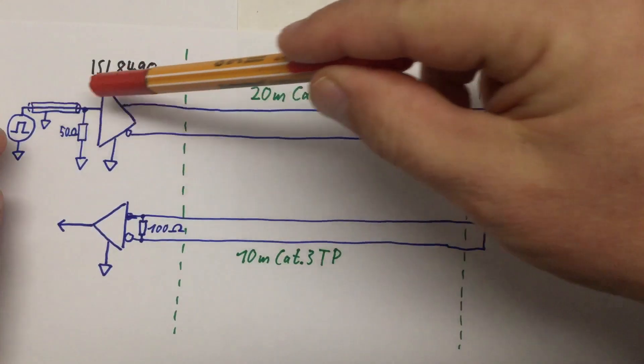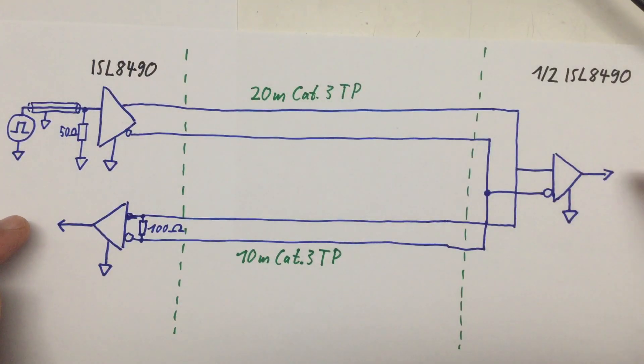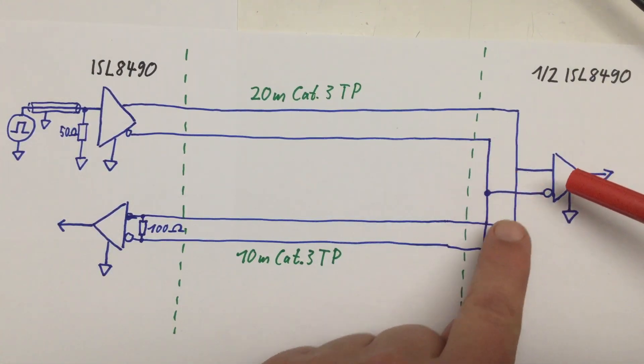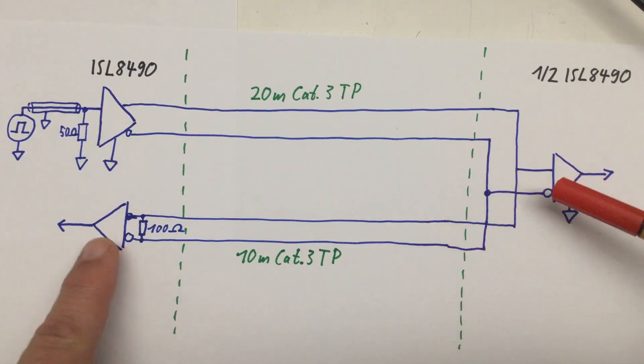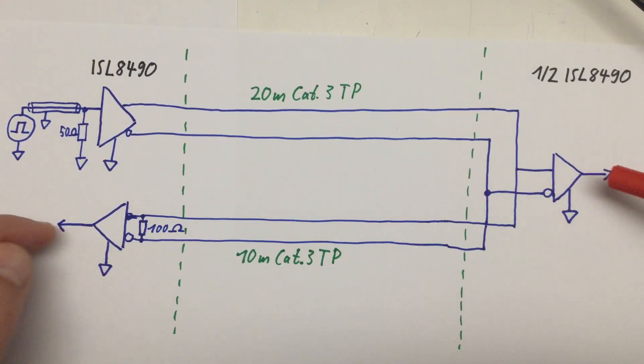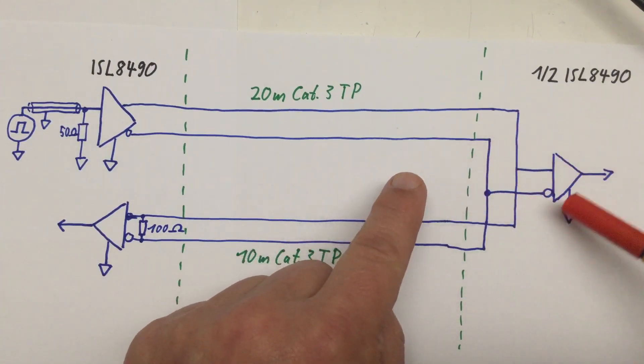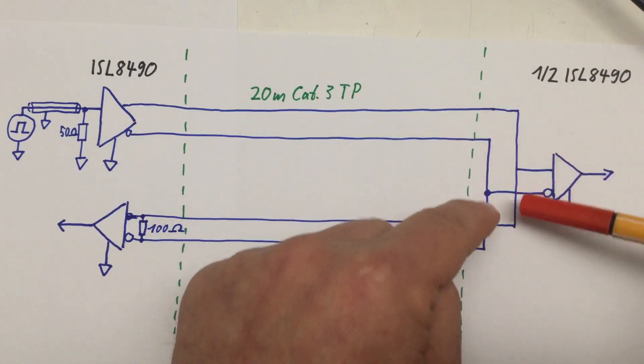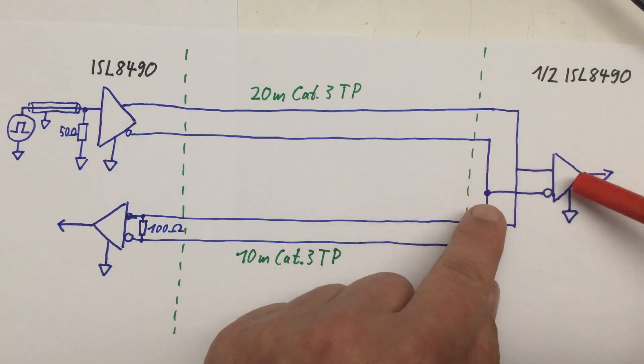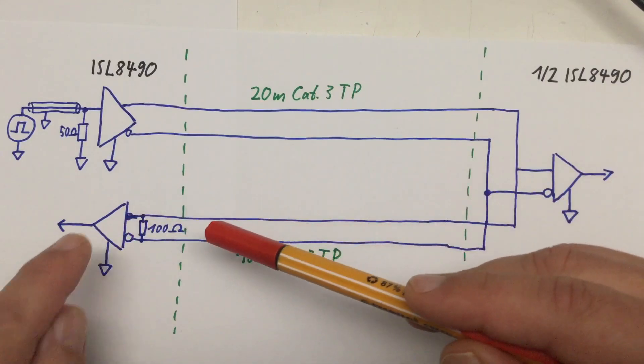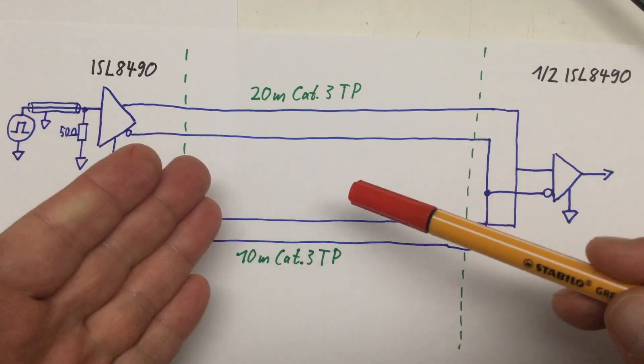Now, we've seen what's going in here and what's coming out here and here. And please remember, we had a 50 nanosecond delay here between the two outputs, just caused by the 10 meters of CAT3 twisted pair cable. So, question is, how does the signal look like here on our differential lines for the first receiver and here for the second receiver? Let's have a look.